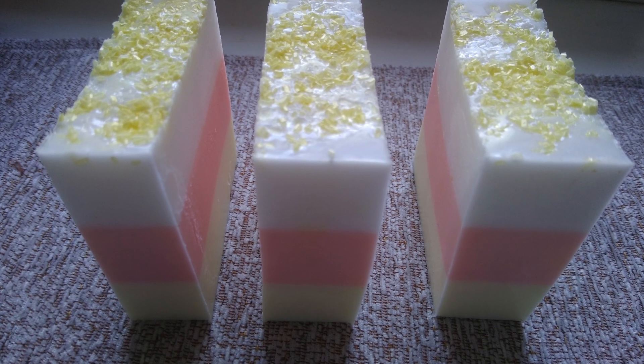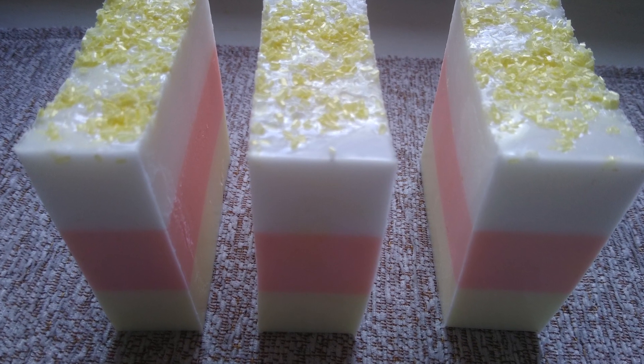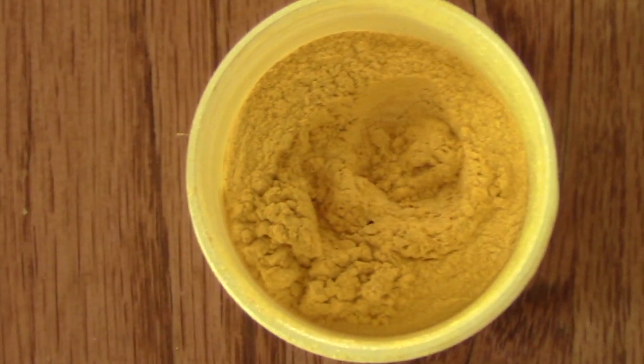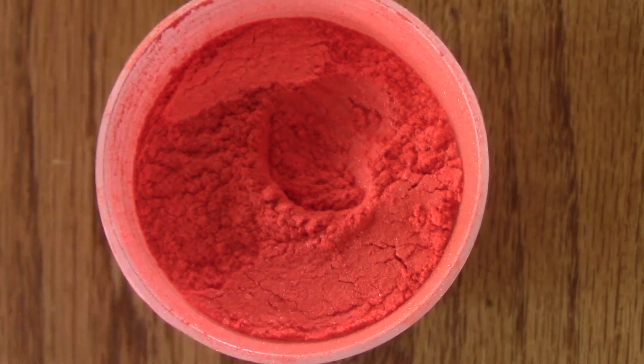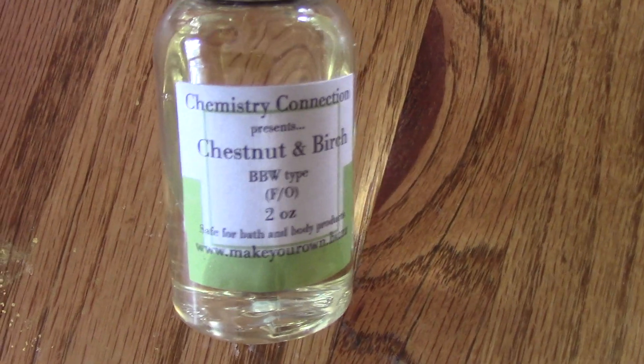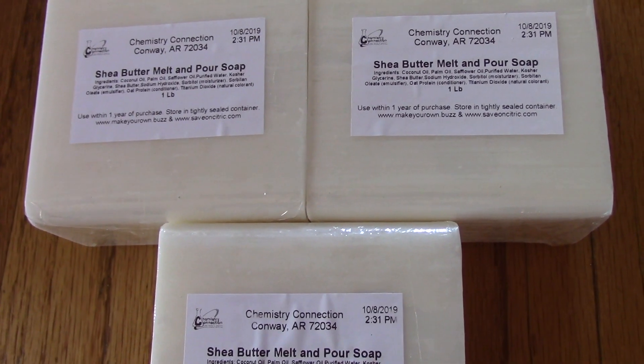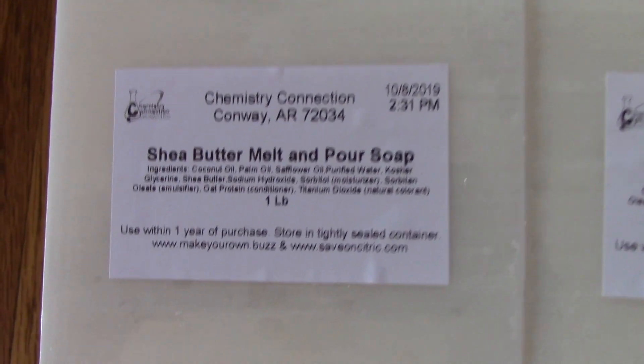Hi, welcome back to Chemistry Connection. Today we're going to be making candy corn melt and pour soap. We will be using our magic yellow mica and magic orange mica, as well as our chestnut and birch fragrance oil. To fill our three-pound silicone mold, we will be using three pounds of our shea butter melt and pour soap.